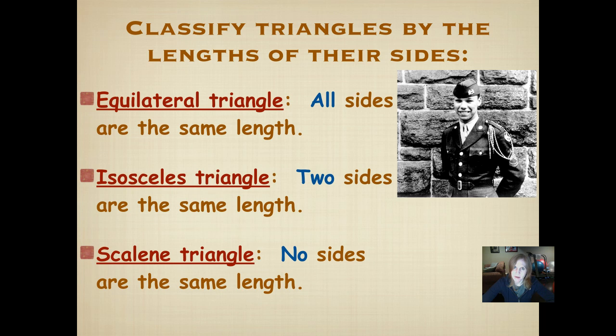A scalene triangle. That's where every single side's length is different. No sides are the same length. And if you look at a capital S for scalene, there are no straight sides. So we can remember that no sides are the same length. That's a picture of Colin Powell when he was younger. I like the way he looks in his uniform. He looks very devoted to his country.